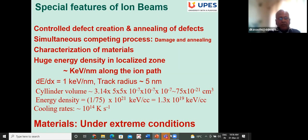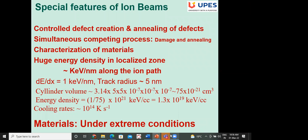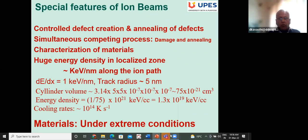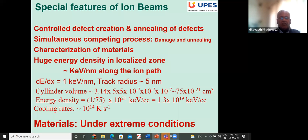Ion beams have the capability for controlled defect creation, annealing of defects, and characterization of materials. A huge energy density is deposited in a localized region. The material undergoes fast cooling at rates as high as 10¹⁴ K/s, happening in picosecond time within a narrow cylinder of about 5 nm. Materials are brought to extreme conditions — these are specific features of ion beams utilized in different ways.